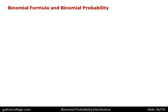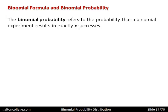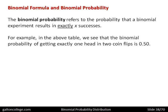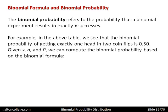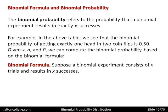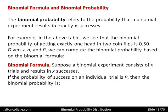Binomial formula and binomial probability: binomial probability refers to the probability that a binomial experiment results in exactly X successes — exactly X successes. For example, from the table on the previous slide, the binomial probability of getting exactly one head in two flips of a coin is 0.5. Given the probability of getting a certain outcome X in N trials with the probability P of that outcome, we can compute the binomial probability based on the binomial formula.